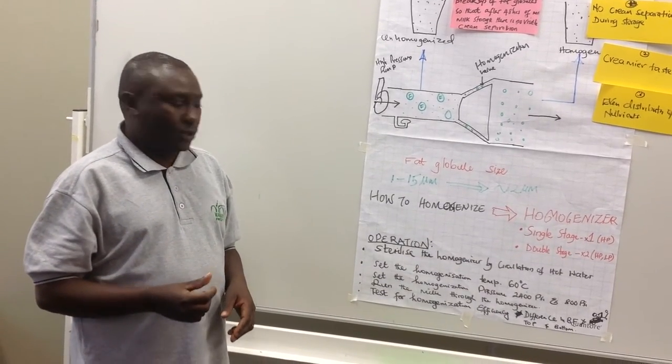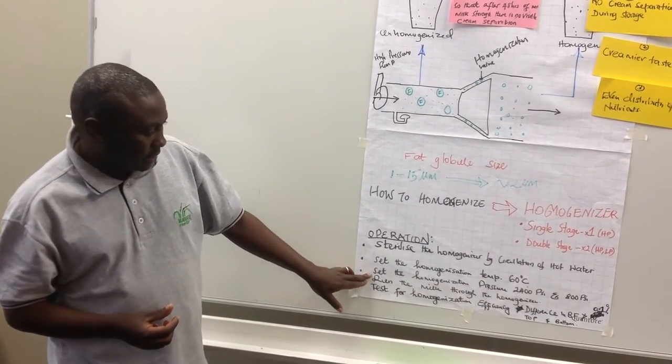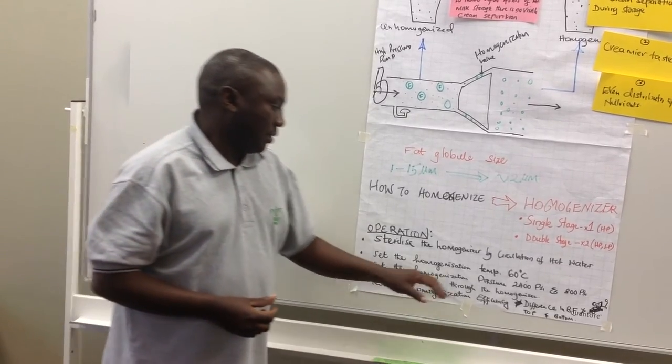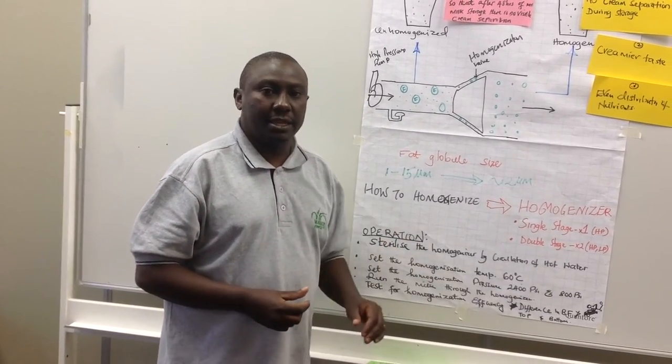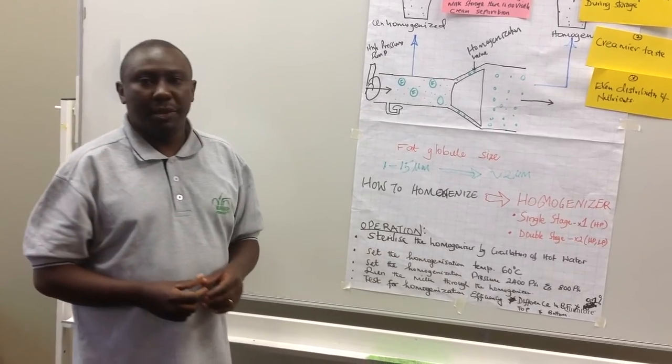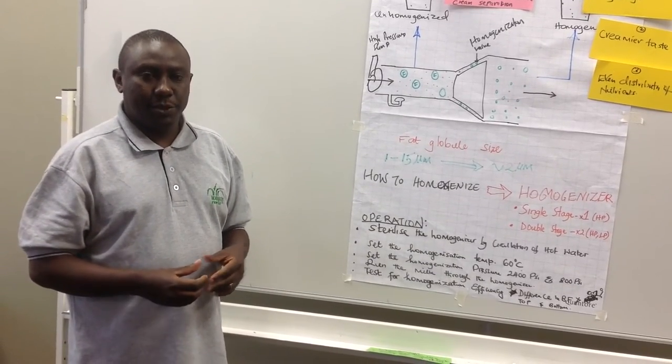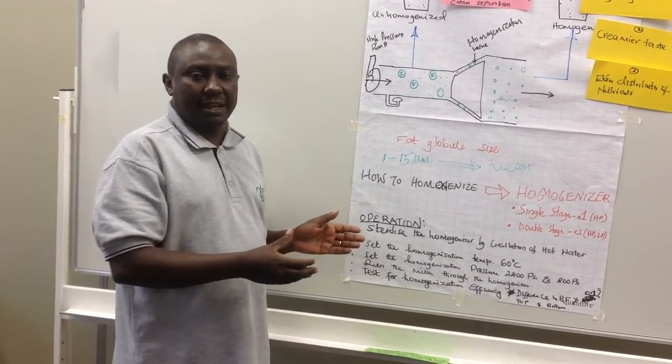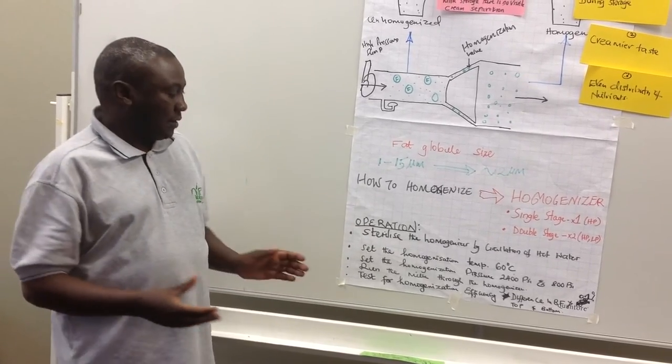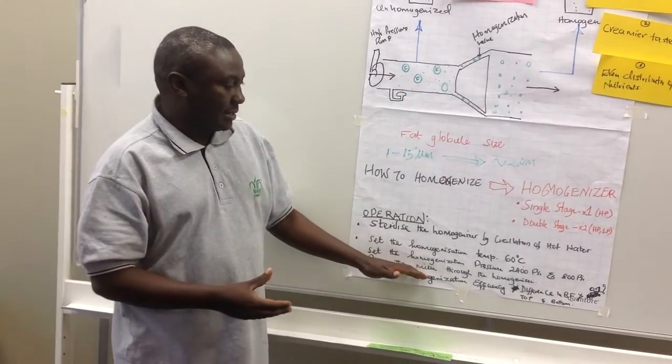And you are ready to go. The next step is to run the milk through the homogenizing unit so that the milk gets homogenized. You cannot homogenize milk unless you put it in a homogenizer.